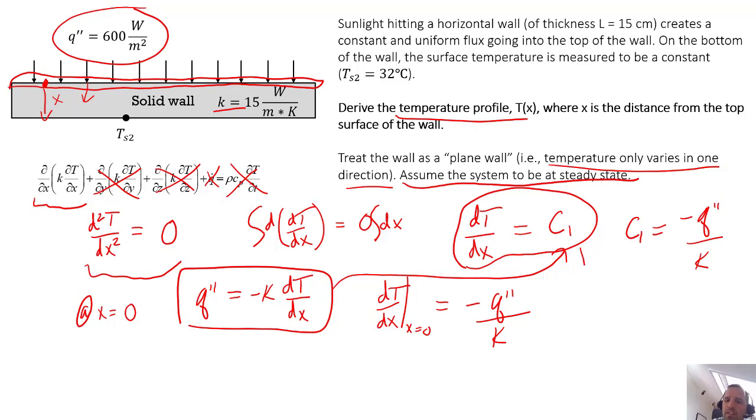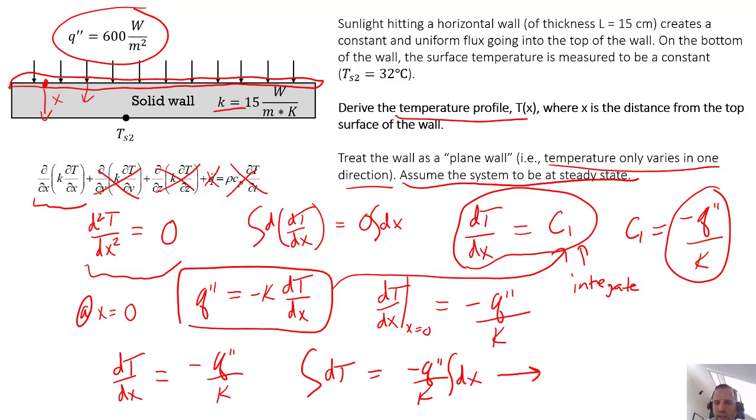So now we're going to integrate this equation to get this into temperature form. We have dT/dx equal to c1. I'm going to go ahead and plug in this guy for c1, which is minus q double prime over k. This is just a constant. So we have dT is equal to minus q double prime over k times dx. Then we can integrate and we get T is equal to minus q double prime over k times x, the integral of dx is x, plus our second constant of integration.